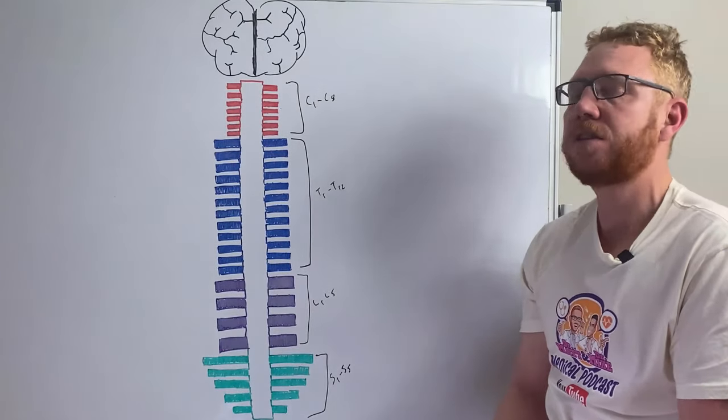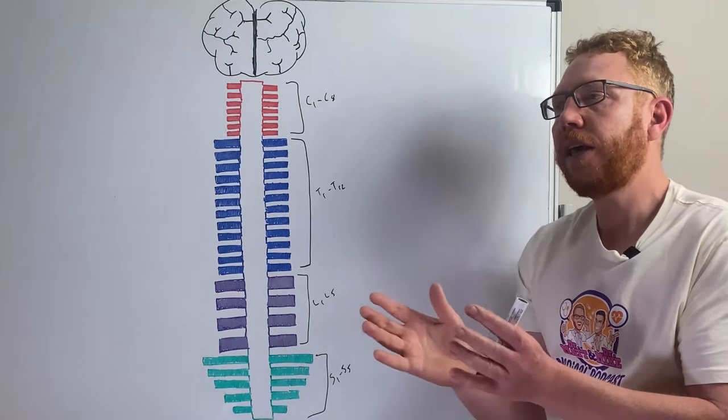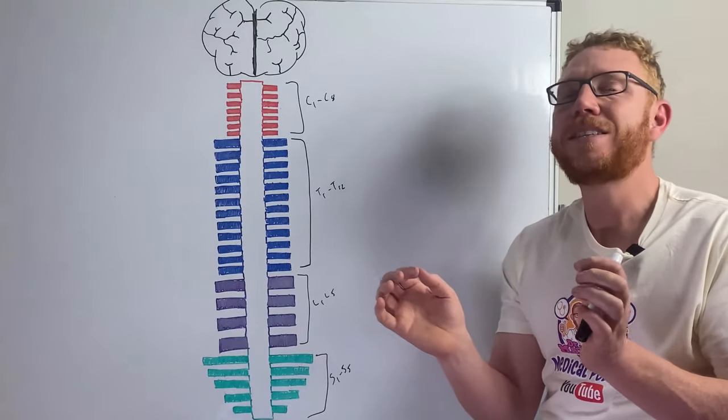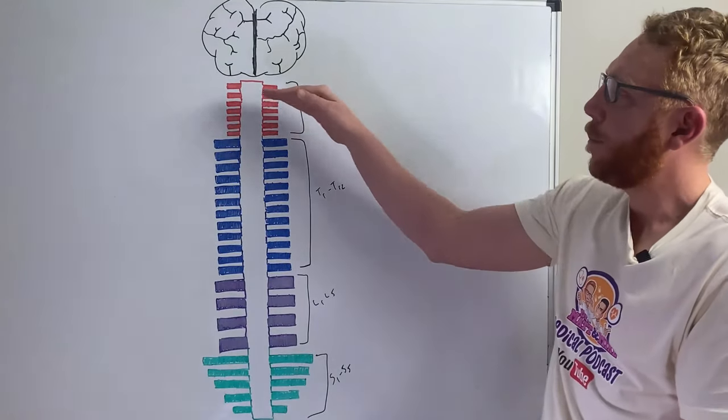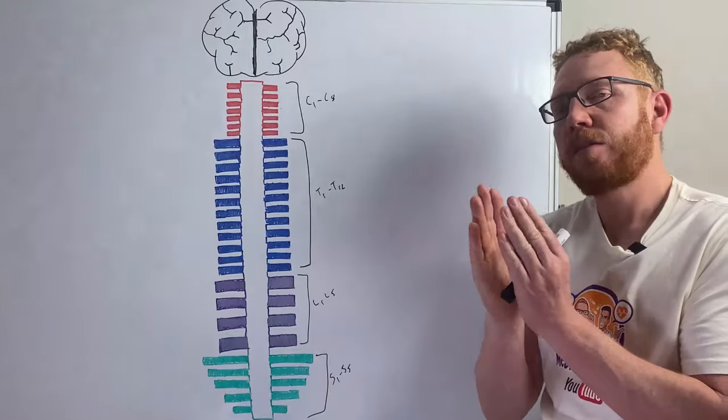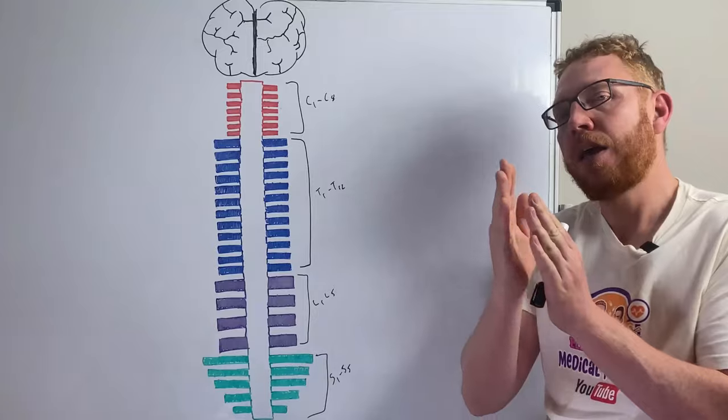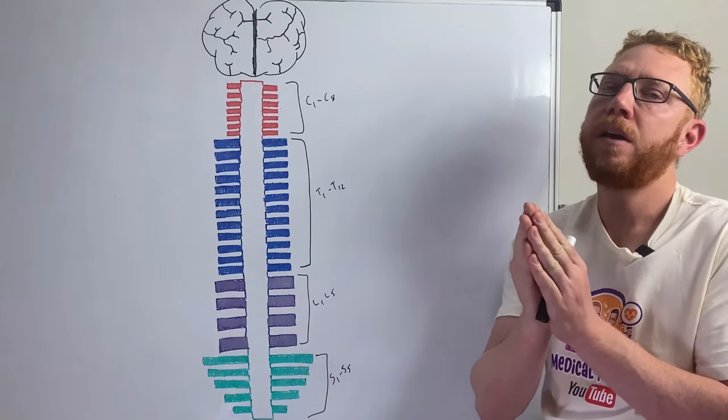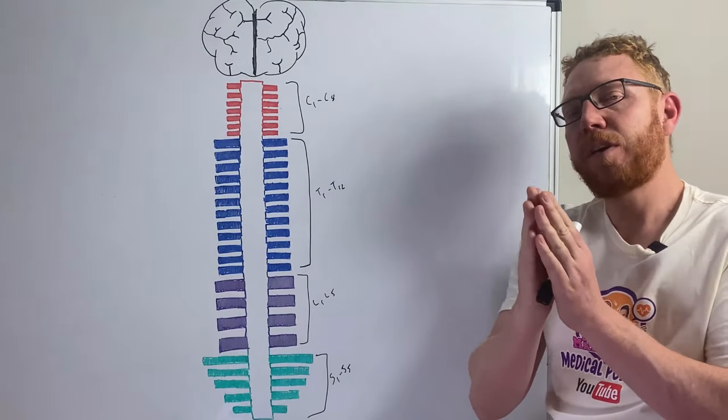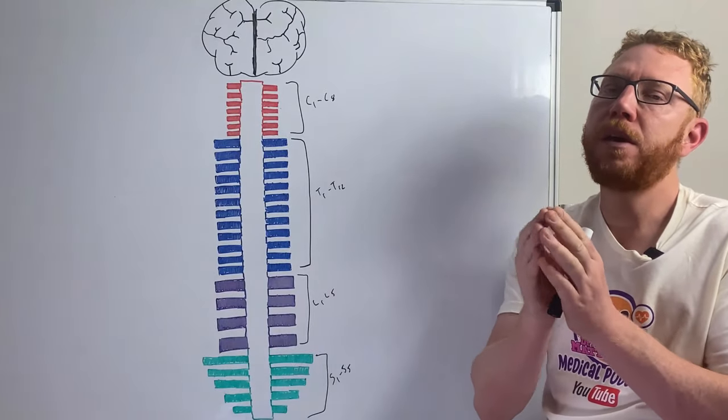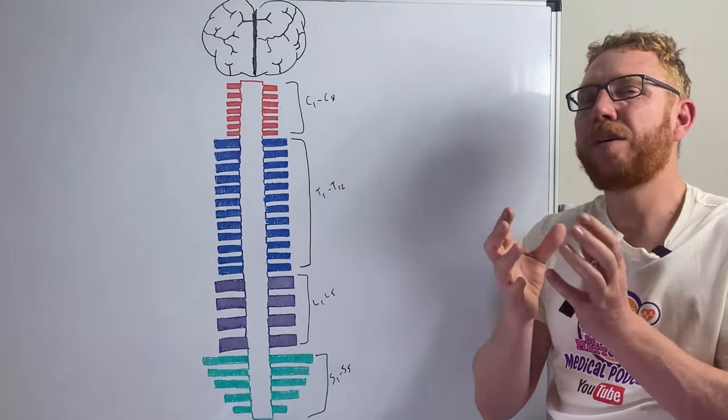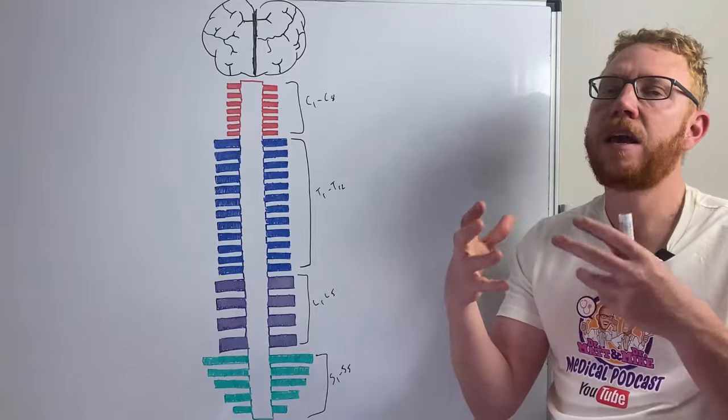Before I get on to the levels of injury, I just want to make clear that no injury is the same. So even though it might occur at the same level, spinal cord injury can be at different degrees of severity. So some can be complete, some can be partial, some can be at one side, some can be centrally. So they're never going to be completely the same, at least in their symptoms.